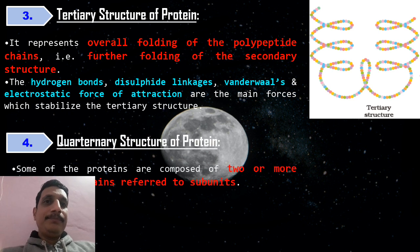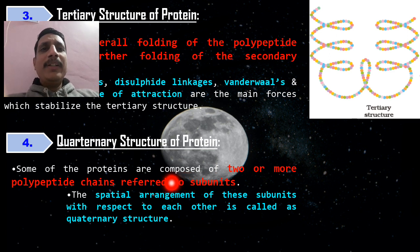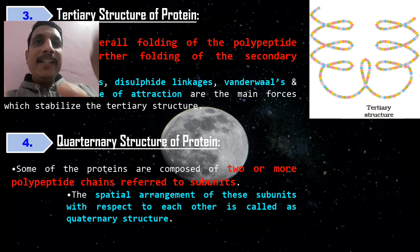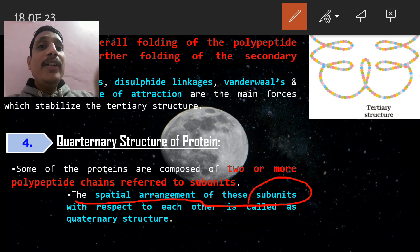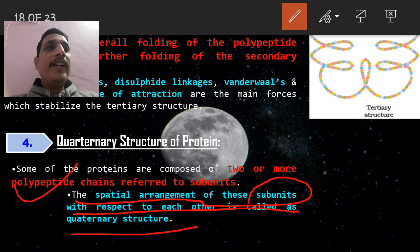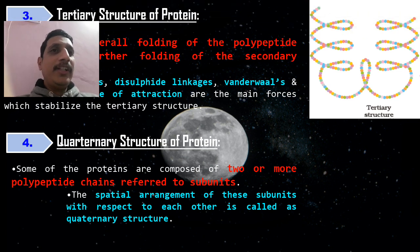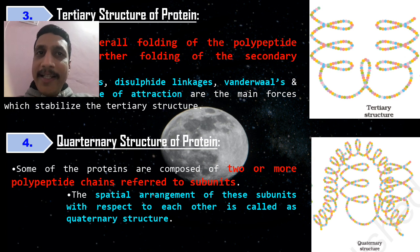Quaternary structure: some proteins are composed of two or more polypeptide chains referred to as subunits. When two or more polypeptide chains are present in the protein, each polypeptide chain is called a subunit. The arrangement of these subunits in space with respect to each other is called the quaternary structure. In simple words: the arrangement of subunits in the chain is called quaternary structure.